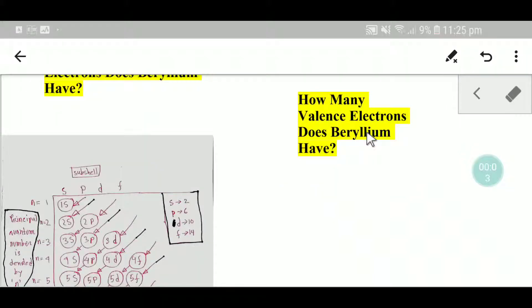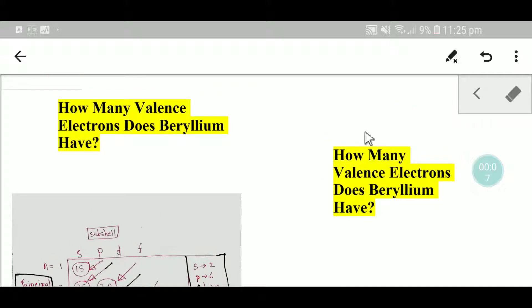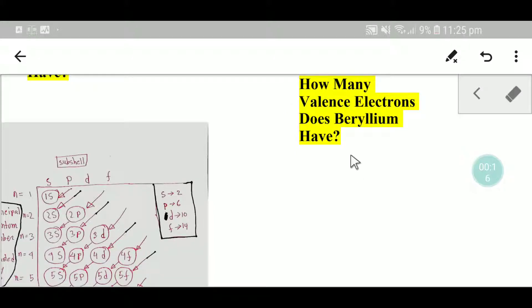Welcome to Chemistry Tutorial 360. Today we are going to find out the valency electrons of beryllium. To find out the valency electrons of beryllium, we have to look at the periodic table.